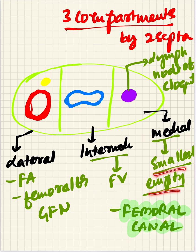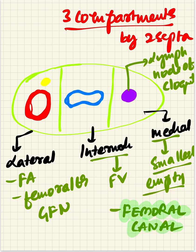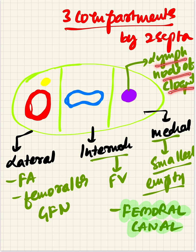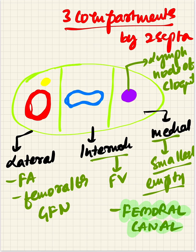The medial-most compartment of the femoral sheath, which is the smallest and empty compartment containing the lymph node of Cloquet - also known as Rosenmuller's lymph node - is called the femoral canal. This is a very important point to remember.